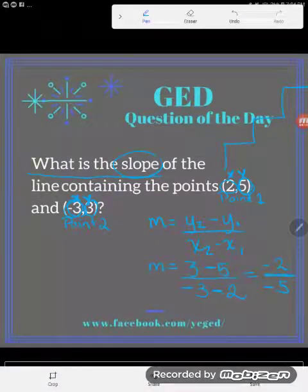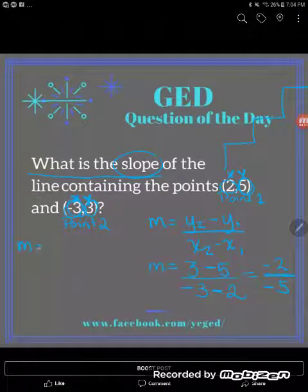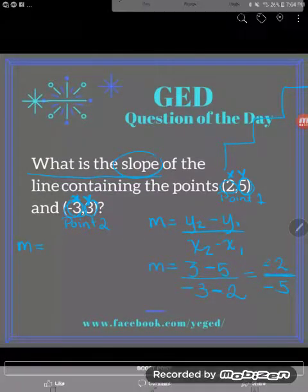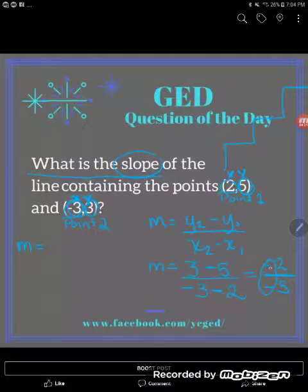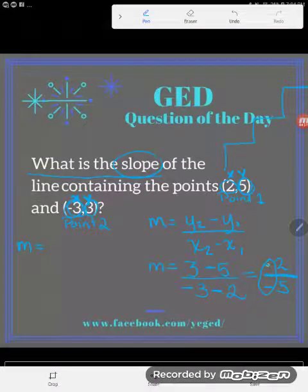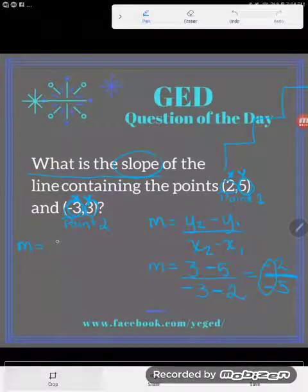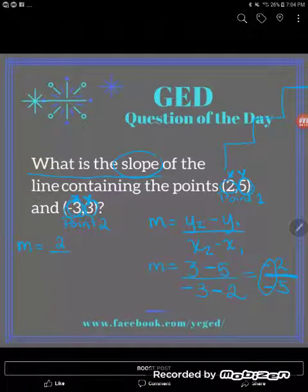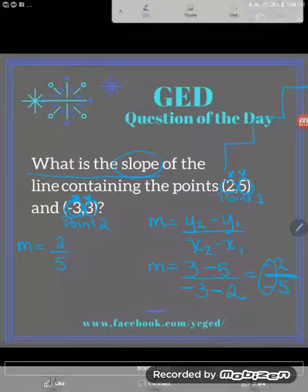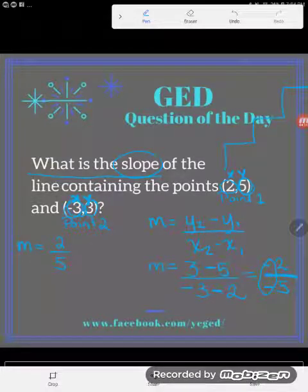And now I'm almost done, but remember that all final fraction answers should be simplified. So simplifying includes reducing, but it also includes simplifying signs. And a negative divided by a negative, because remember a fraction bar means the same as divide, so negative over a negative cancels and turns into a positive. So my slope here is 2/5. This particular fraction won't reduce, and so I'm done.